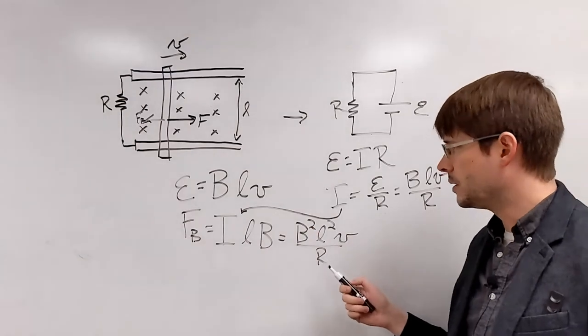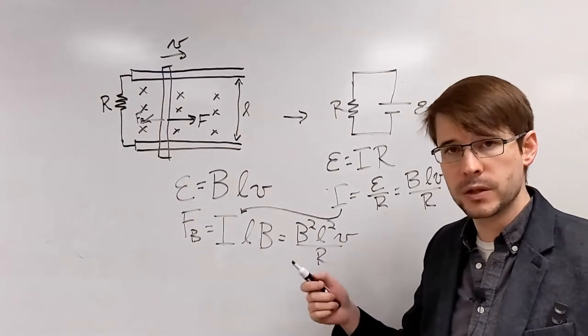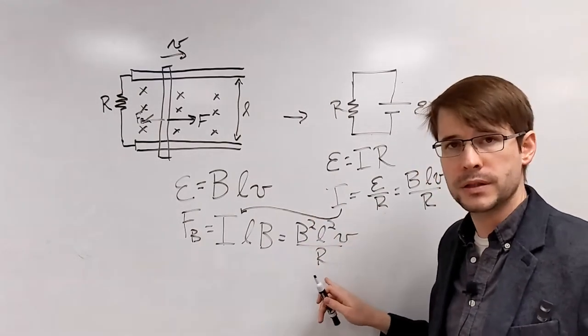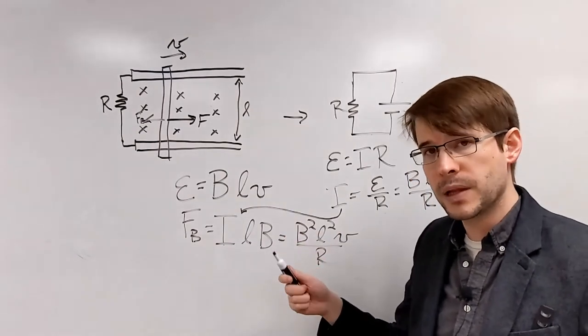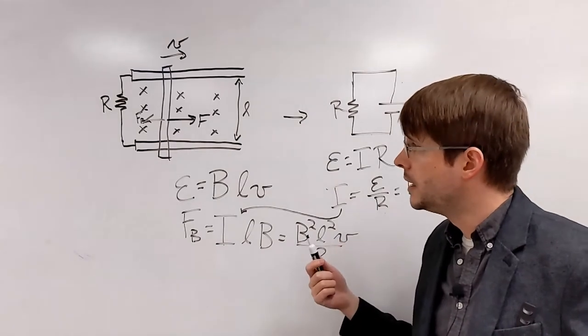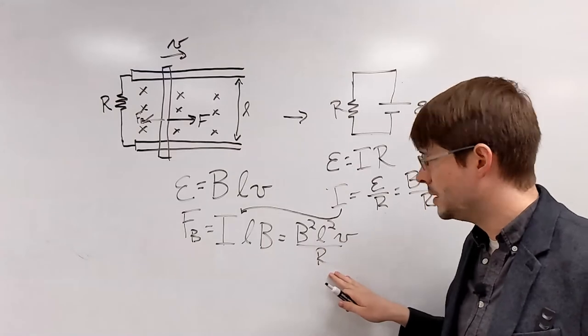Now, this would be regardless of whether it's being applied a force to it or not. If it was just moving along this bar, this would be the magnetic force from it. However, we had stated originally that we're applying a forwards force that is causing it to move, and we're moving it at constant speeds. That means that our force would also be equal to this.